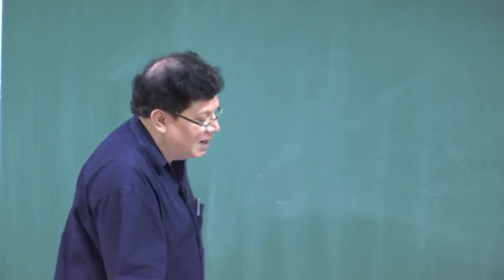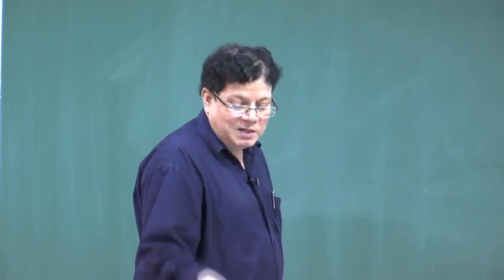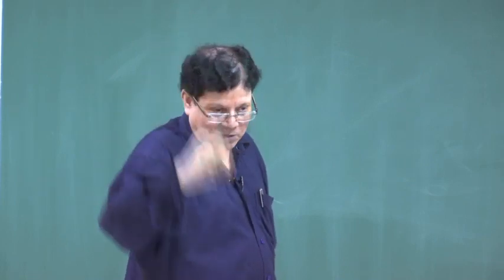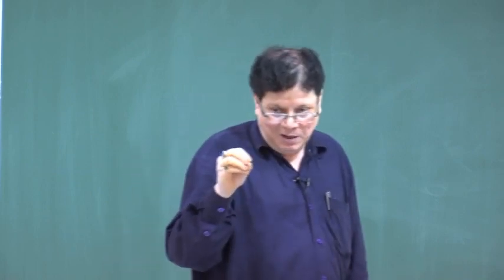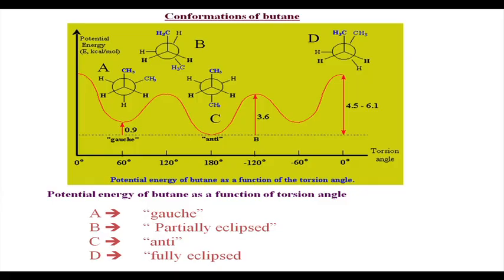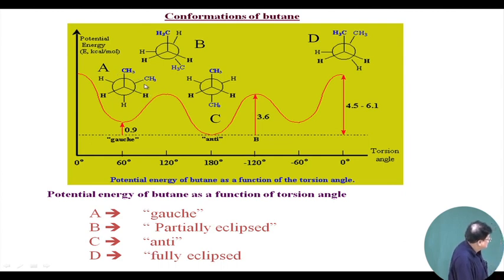How does energy vary? We have identified four different conformations specifically. Remember, this molecule has innumerable conformations — we are just identifying some based on dihedral angles and giving them names. The A form is where the dihedral angle between the two methyls is 60 degrees — that is called the gauche form.